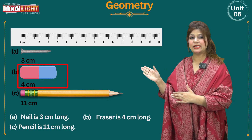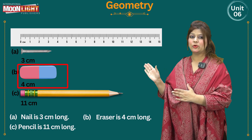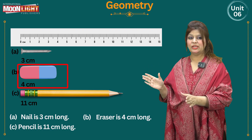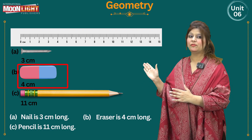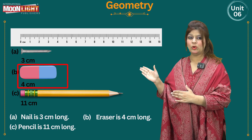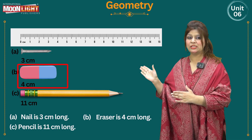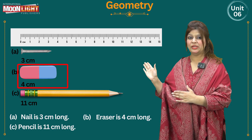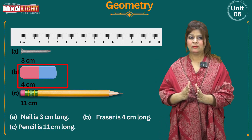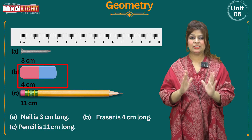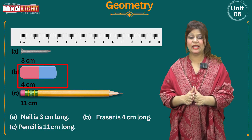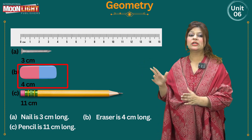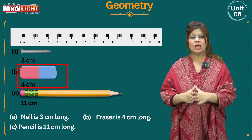Now check this one — this is an eraser. The position of the eraser is going to be measured the same way. We align the 0 with this eraser's end point, and then check the next end point to see where the digits fall. Here the digits show 4 — so this eraser is 4 centimeters long.